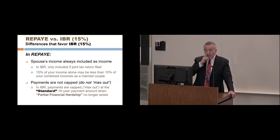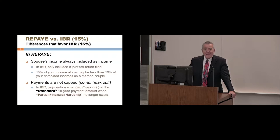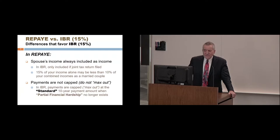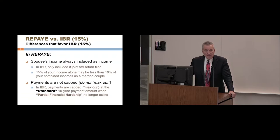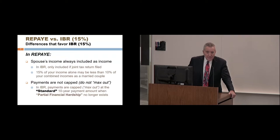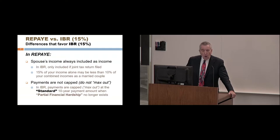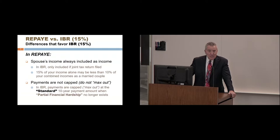Now let's compare REPAYE with the original IBR plan — the 15% option — because some borrowers may not be new borrowers and therefore aren't eligible for PAYE, making the original 15% IBR plan the only other option to consider. What differences favor IBR over REPAYE? In REPAYE, your spouse's income is always included when calculating your monthly payment, whereas in IBR it's only included if you file a joint tax return. Filing separately, 15% of your income alone may be less than 10% of your combined household incomes. If that gives you a lower monthly payment, it might make sense to file separately and choose IBR — as long as the tax cost of filing separately doesn't offset that benefit.